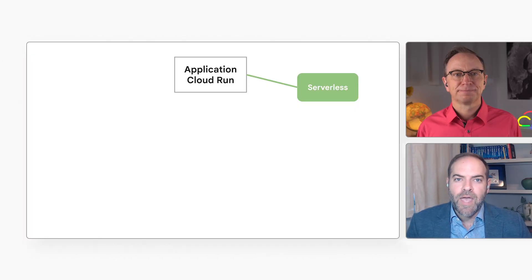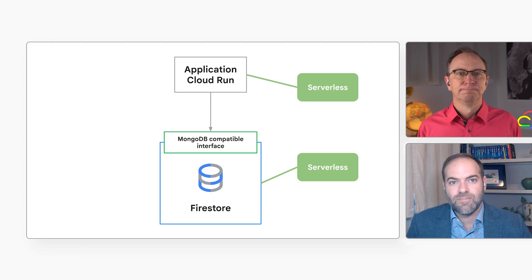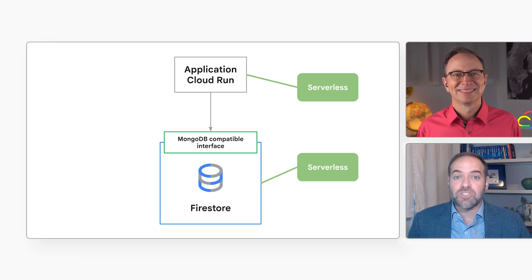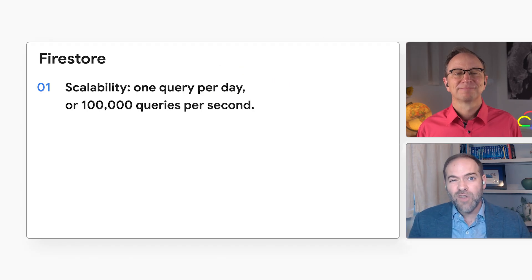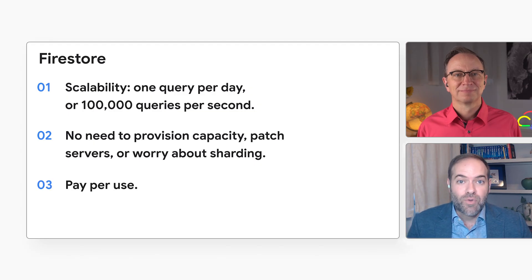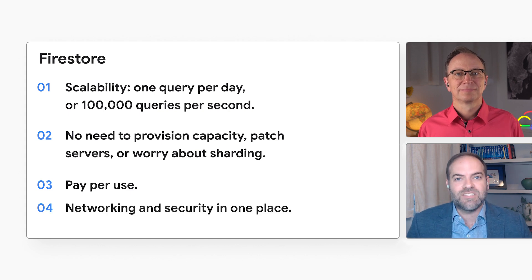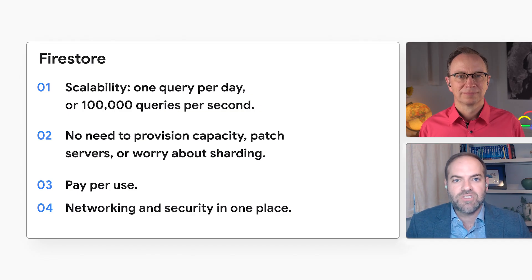I liked your demo, Patrick, but I have so many questions. Why would I choose to use Firestore? Well, many developers love serverless for its simplicity and pay-per-use model — it's why Cloud Run is so popular. But you need a database that works the same way, and that's Firestore. It's a serverless database that works well for one query per day or 100,000 queries per second without you ever having to provision capacity, patch servers, or worry about sharding. You only pay for the reads and writes you actually use, not for idle time. And since it's fully integrated with Google Cloud, your IAM, networking, and security are all in one place. Paired together, Cloud Run and Firestore create a powerful, simple, and scalable stack for your application.